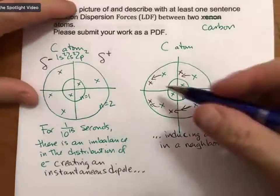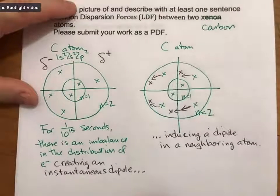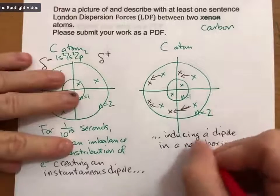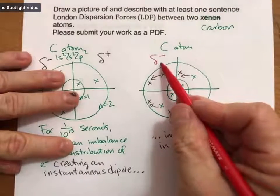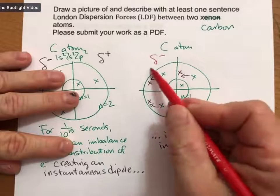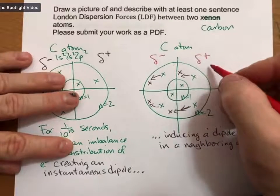And so this induced dipole will have a partial negative because the electrons are moving over here and a partial positive on the other side.